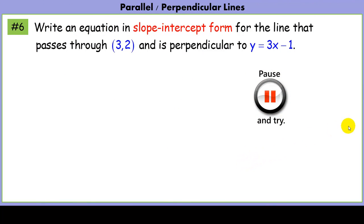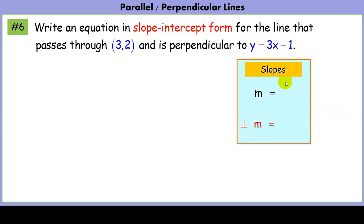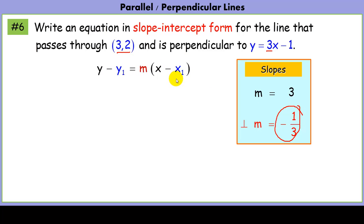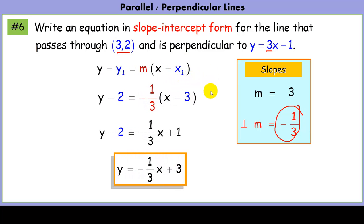Try one: the given line has slope 3, so the perpendicular slope is -1/3. We have our slope and our point, so we plug into the point-slope formula and convert to slope-intercept form. The result is a line with slope -1/3x that crosses the y-axis at 3.